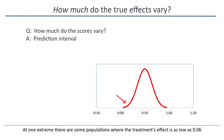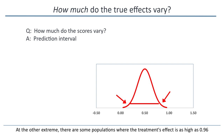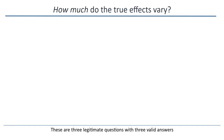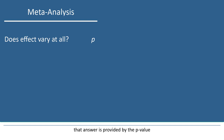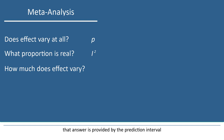At one extreme, there are some populations where the treatment's effect is as low as 0.06, and at the other extreme, there are some populations where the treatment's effect is as high as 0.96. These are three legitimate questions with three valid answers. We need to be clear about what question we intend to ask, and then apply the corresponding answer. If the question is does the effect size vary at all, that answer is provided by the p-value. If the question is what proportion of the variance is real, that answer is provided by I-squared. If the question is how much does the effect size vary, that answer is provided by the prediction interval. The questions and answers are not interchangeable.